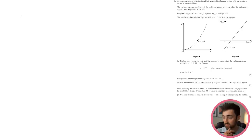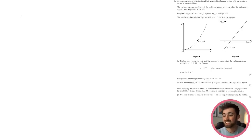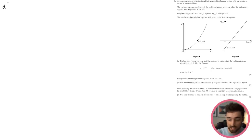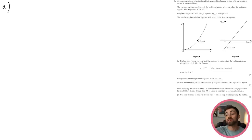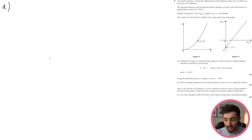Question 9: a research engineer measures braking distance d (metres) at speed v (km/h) in wet conditions. Graphs of d vs v and log₁₀(d) vs log₁₀(v) are plotted. Part A: explain how figure 6 suggests the model d = kv^n. If we take log₁₀ of d = kv^n, we get log₁₀(d) = log₁₀(k) + n·log₁₀(v), which is a linear relationship — Y = mX + c — explaining why figure 6 shows a straight line.